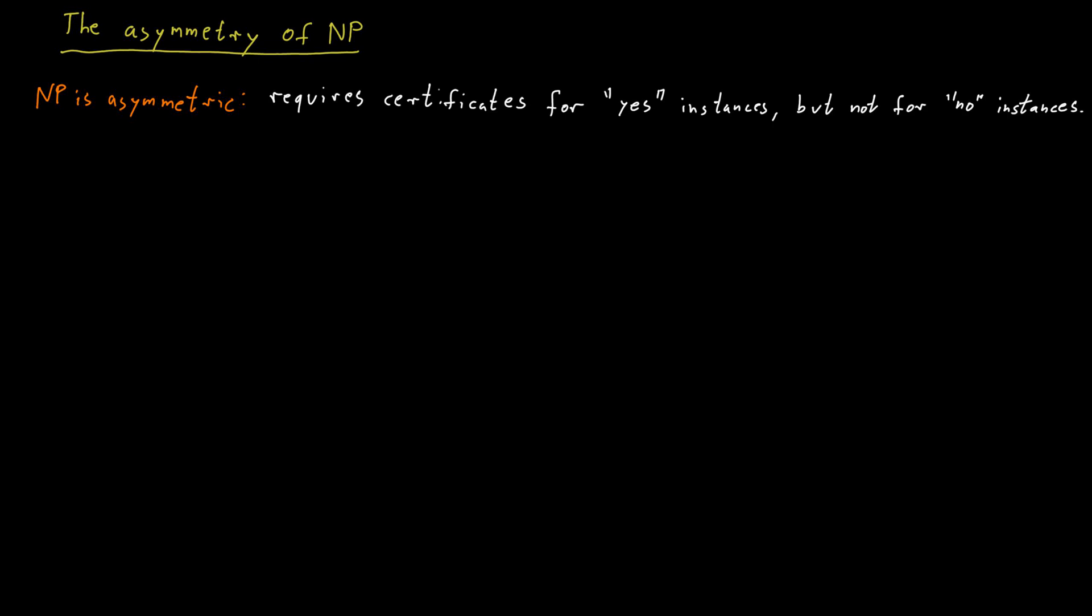Consider, for example, the problem satisfiability. For satisfiability, we have certificates for yes instances, which is just a satisfying assignment. So satisfiability is in NP and indeed we have seen that it's NP complete.